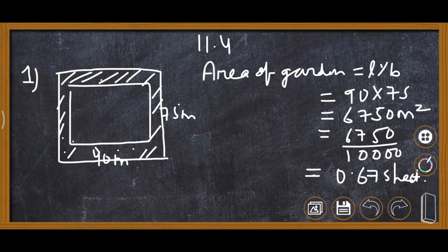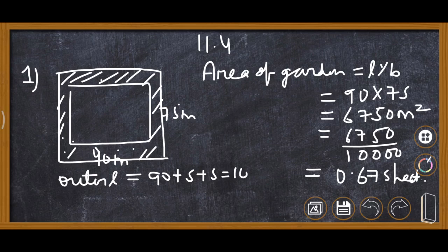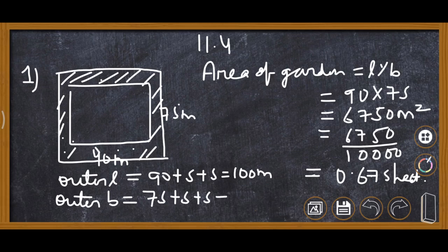Now we will find the outer length and breadth. The inner length is 90, so the outer length will be 90 plus 5 plus 5, which is 100 meter. The outer breadth is 75 plus 5 plus 5, which is 85 meter.